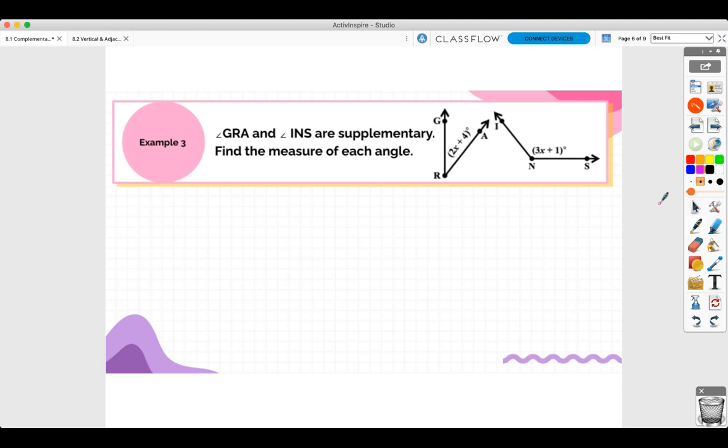Angle GRA and INS are supplementary. Find the measure of each angle. So again, we know that these two angles add up to 180. So angle GRA plus angle INS is equal to 180 degrees. GRA is 2X plus 4 plus INS is 3X plus 1, and that equals 180. Now remember, we're solving an equation this time. The first thing when you're solving an equation with more than one variable term is you got to combine your like terms.